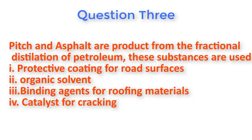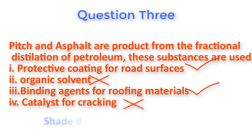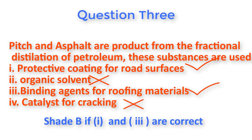Question number three: Pitch and asphalt are products from the fractional distillation of petroleum. Option one — protective coating for road surfaces — is correct. Option two — organic solvent — is wrong. Option three — binding agent for roofing materials — is correct. Option four — catalyst for cracking — is wrong. Asphalt and pitch are not used as organic solvents or catalysts; they are mainly used as protective coating for road surfaces and binding agents for roofing materials. So options one and three are correct, and the right answer is B.